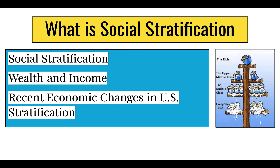When looking specifically at wealth and income, both are related to social stratification of socioeconomic classes, but they mean different things. Income is a person's wages or investment dividends — the money you make at your job or on investments — while wealth is the total value of money and assets minus any debt. Wealth includes things like the value of a home, cars, stocks, bonds, other real estate, and businesses.